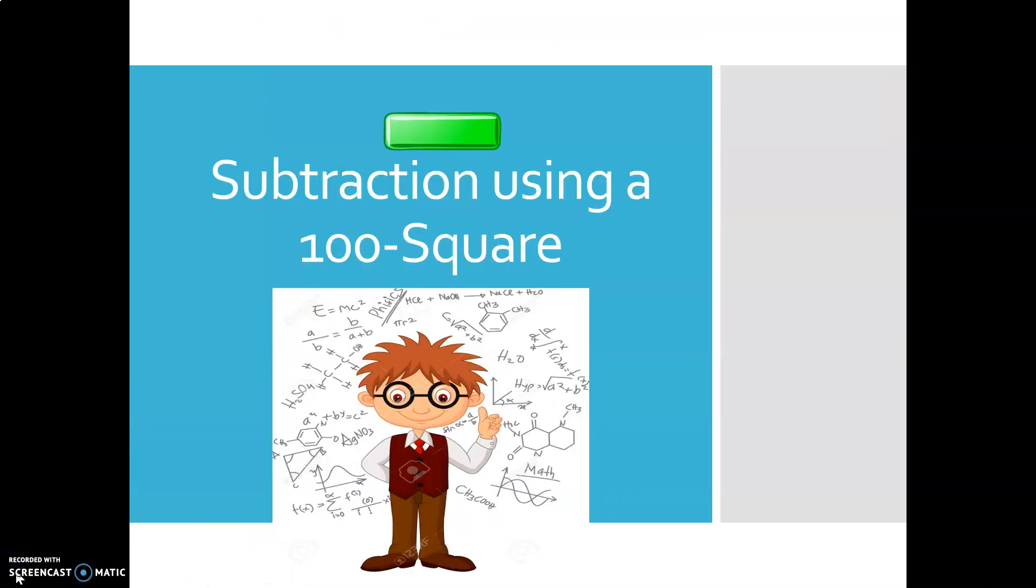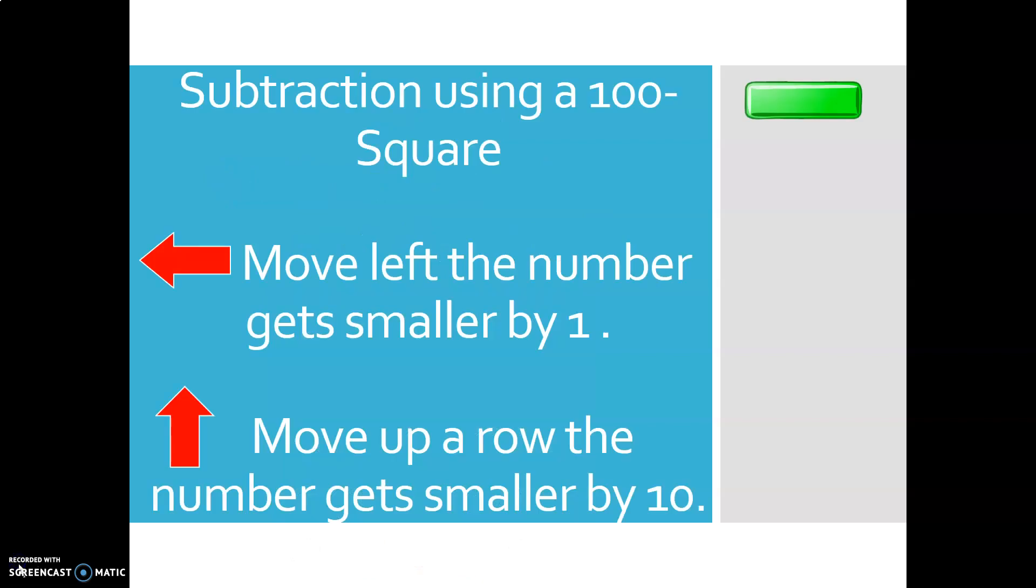Subtraction using a 100 square. So just to remind you again, subtraction using a 100 square: if we move to the left, the number gets smaller by 1. And if we move up a row, the number gets smaller by 10.